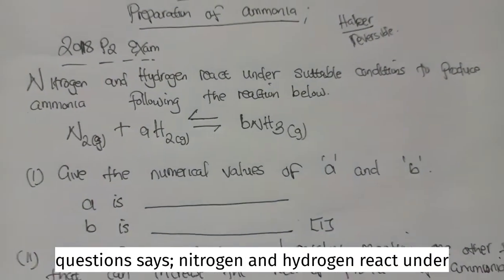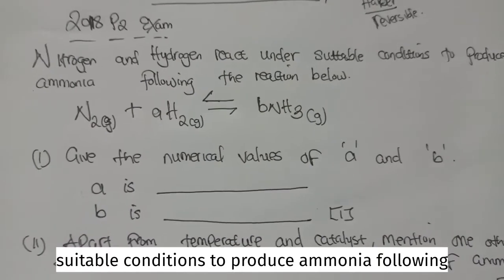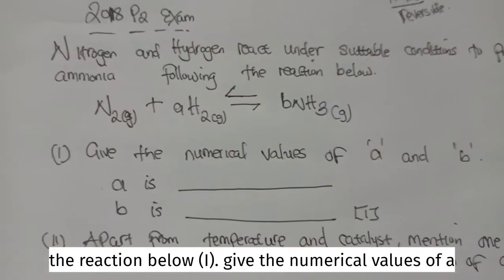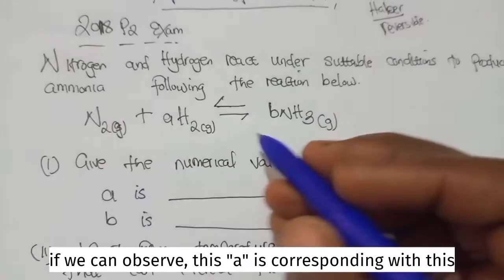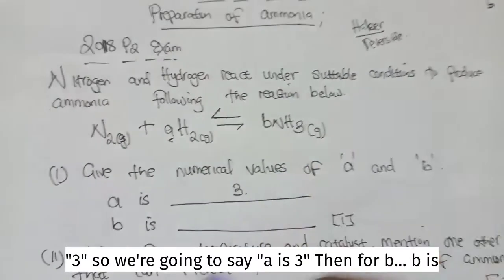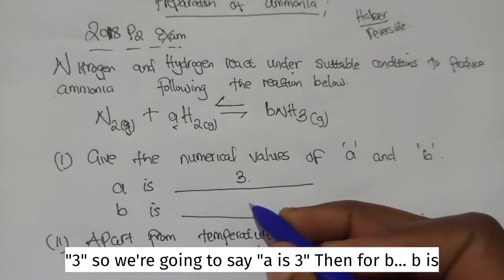Now the question says, nitrogen and hydrogen react under suitable conditions to produce ammonia following the reaction below. One, give the numerical values of A. If we can observe, this A is corresponding with these three. So, we are going to say A is three. Then for B, B is going to become two.